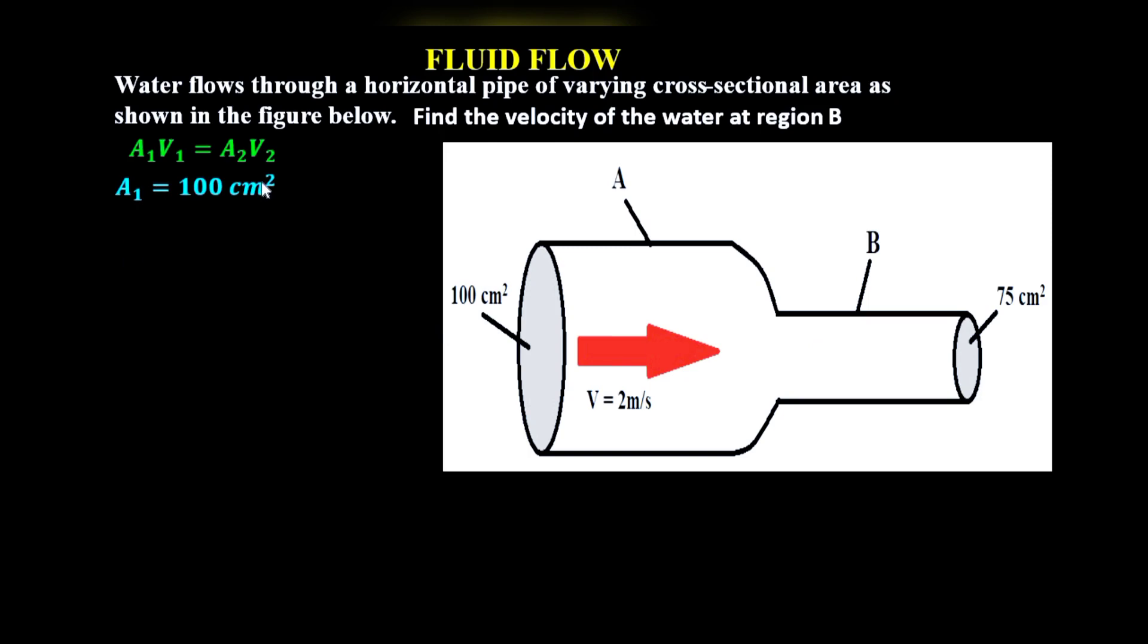A1 is 100 square centimeters, A2 is 75 square centimeters, and V1 is 2 meters per second. Because we have these values in square centimeters, I recommend that you convert this to centimeters per second. So 2 meters is 200 centimeters per second.